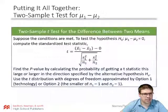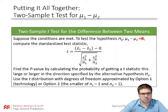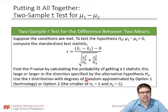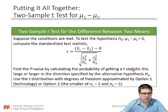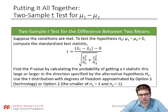To summarize: the two-sample t-test for the difference between two means — suppose the conditions are met, to test the hypothesis mu1 minus mu2 equals 0, compute the standardized test statistic t using (statistic minus parameter) over standard error. Find the p-value from the probability of getting a t-statistic this large or larger in the direction of the alternative hypothesis. Use the t-distribution with degrees of freedom approximated either by technology (preferred) or the smaller of n1 minus 1 and n2 minus 1.